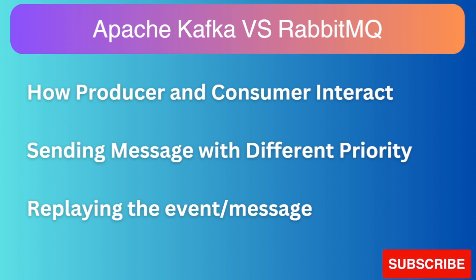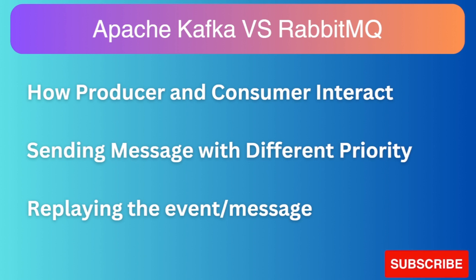Another difference is replaying messages or events. In RabbitMQ, once a message is read, the consumer sends an acknowledgement reply back to the broker, which then deletes the message from the queue. Unlike RabbitMQ, Apache Kafka appends the message to a log file, and that log file remains until its retention period expires. That way, consumers can reprocess the stream data at any time within the stipulated period.